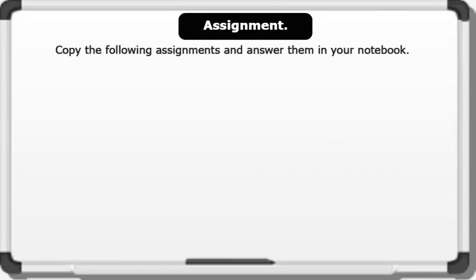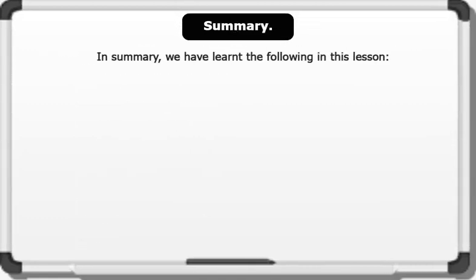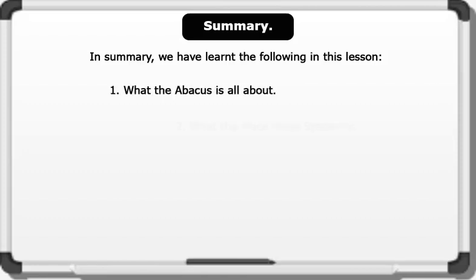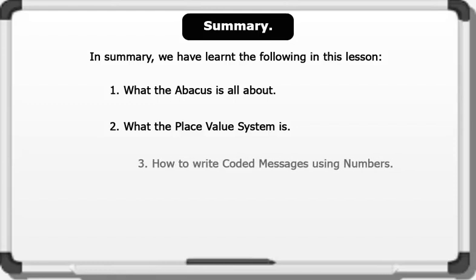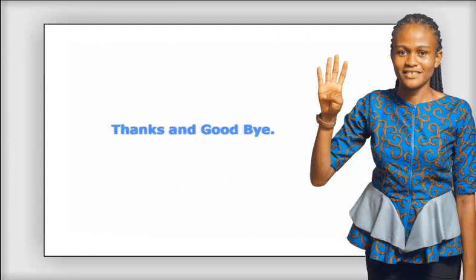Assignment. Pause the video, copy the following assignments, and write the answers in your notebook. In summary, we have learned the following in this lesson: what the abacus is all about, what the place value system is, and how to write coded messages using numbers. I believe you enjoyed this lesson — see you in our next one. Thanks and goodbye.